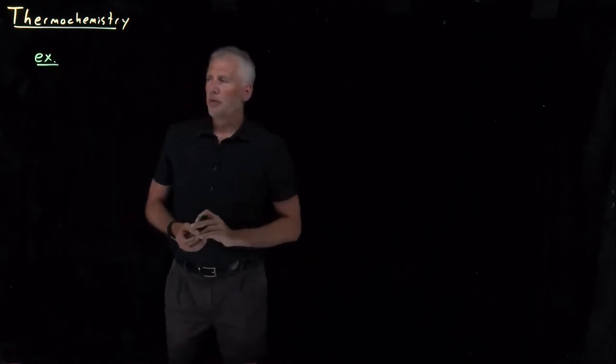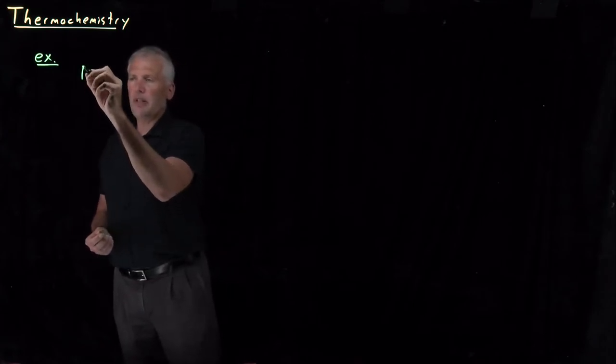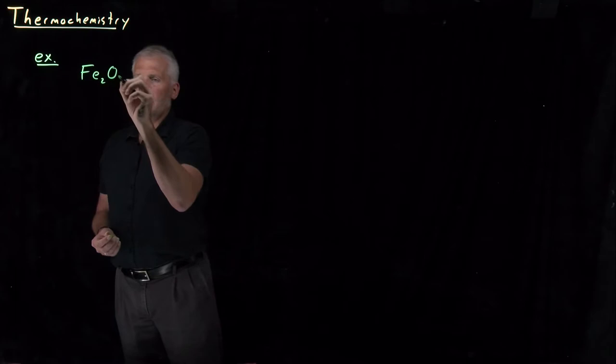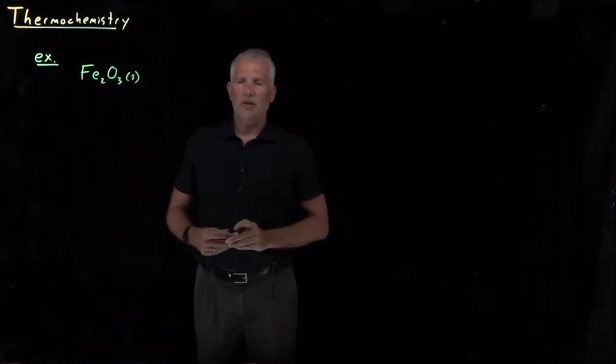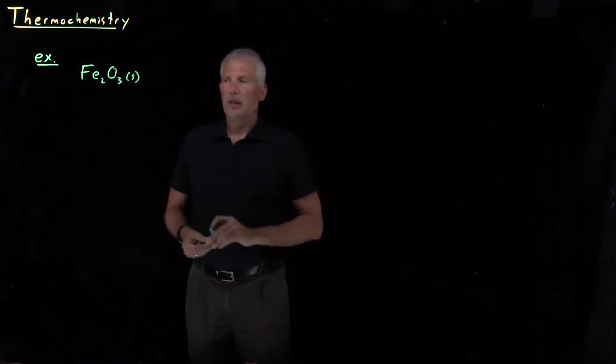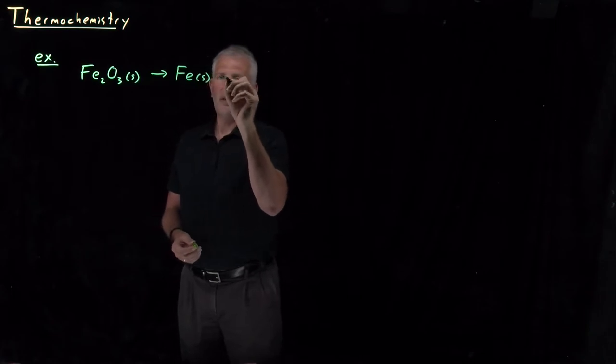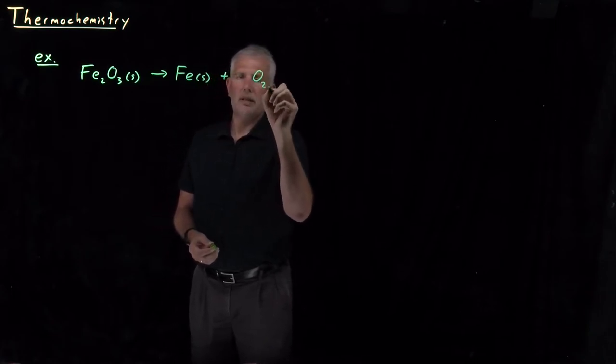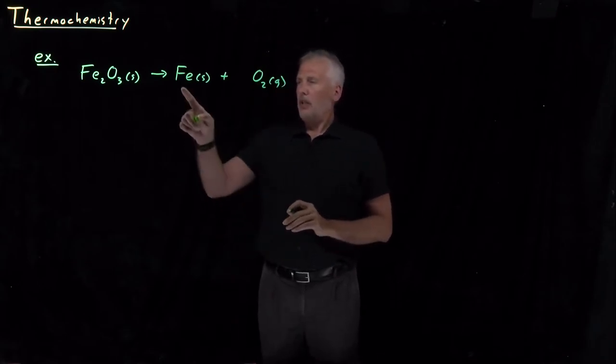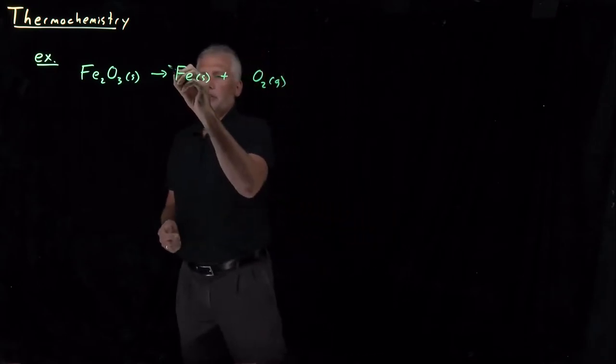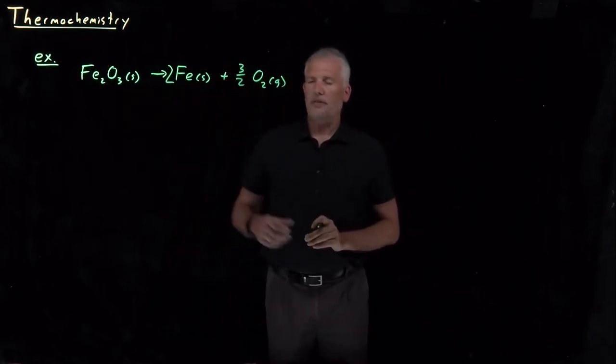As the first relatively simple example, let's suppose the chemical process we're interested in is the decomposition of iron 3 oxide, Fe2O3, decomposing that into pure solid iron and oxygen gas. If I balance that reaction, two irons and three halves of an O2 molecule balance this Fe2O3.